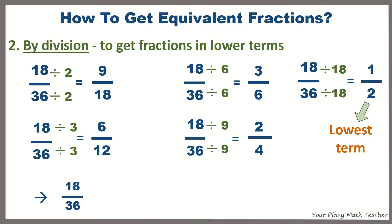So, 18 over 36 is equal to 9 eighteenths, 6 twelfths, 3 sixths, 2 fourths, and 1 half.